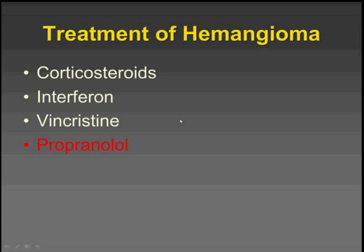The infantile hemangioma is very responsive to drug treatment. In the past we used steroids and vincristine with maybe 50% response. Now we use beta blockers, found serendipitously to be effective, but extremely effective. So we don't see the huge mutilating hemangiomas anymore.